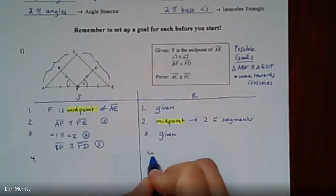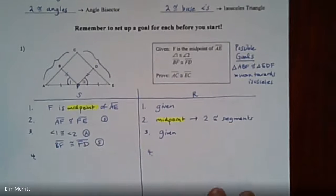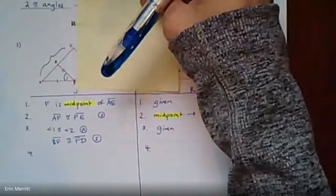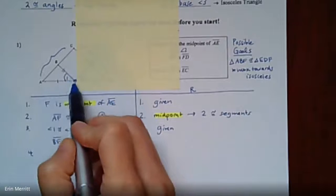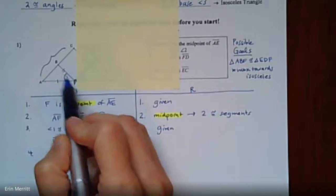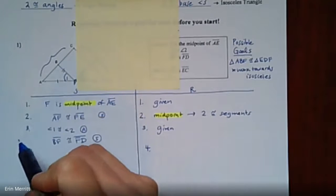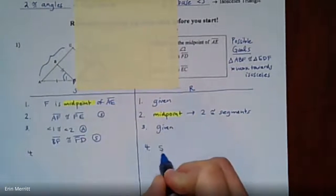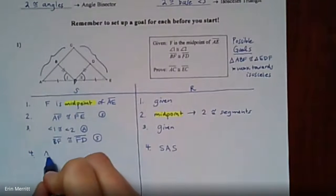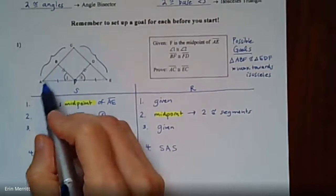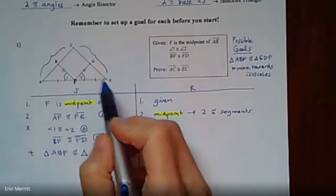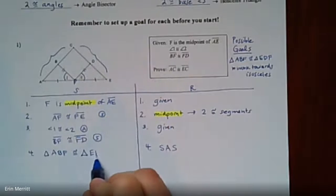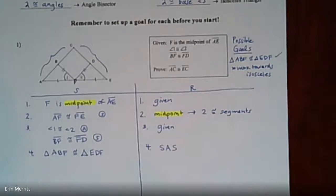Before I can say I have congruent triangles, I need three pieces. Looking at just one of those triangles, I've got a side, another side, and the angle in between them — that's a perfect case of side-angle-side. So I'm going to say triangle ABF is congruent to triangle EDF by SAS. That hits our goal right there.